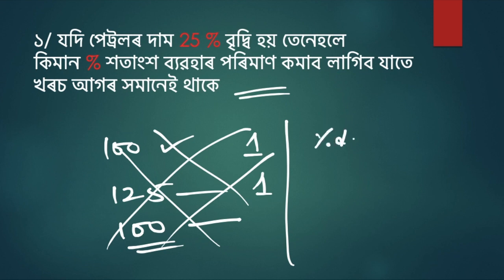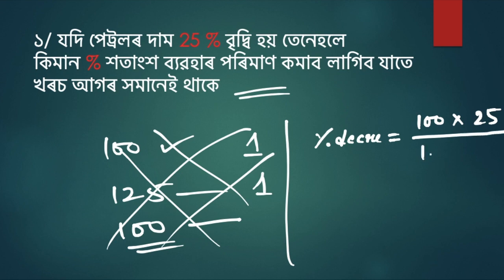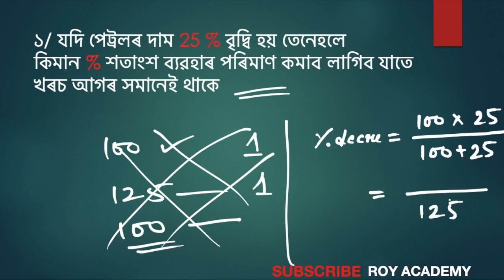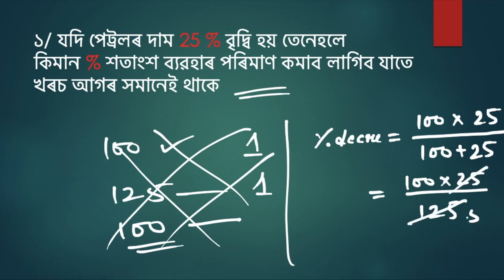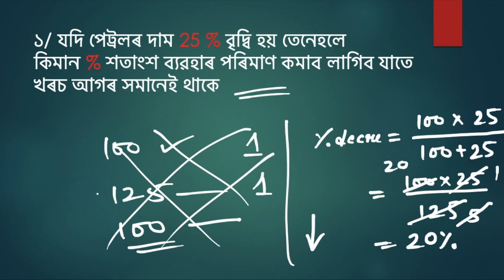Percentage decrease. So we will do 100 into x, x is 25, divided by 100 plus x, that means 25. So if you use this, the second is 125. The second is 100 into 25. So the result will be 5, and the result will be 20. So we will do 20 of practical use.